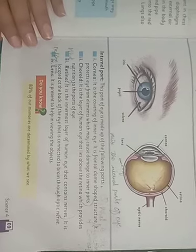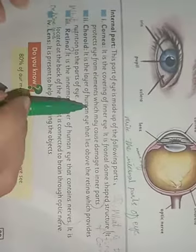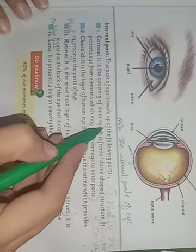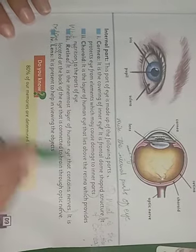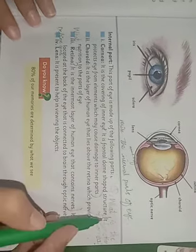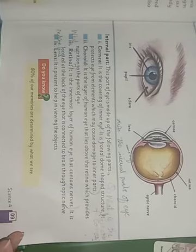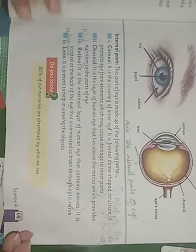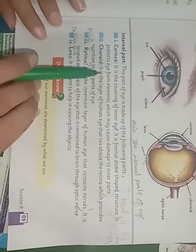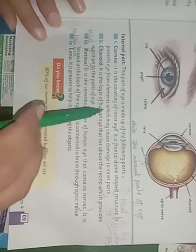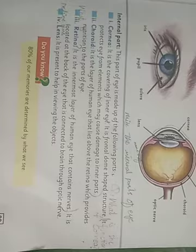The first internal part is the covering of the inner eye. It protects the eye from elements which may cause damage to the inner part.